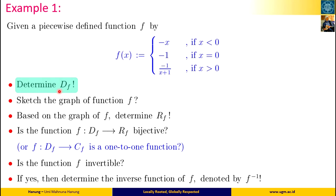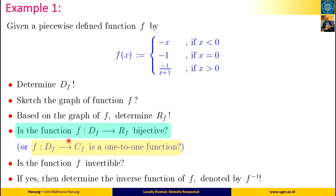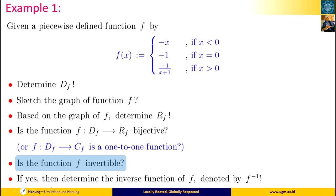We need to: determine the domain of function f (denoted df); sketch the graph of function f; determine the range of function f (denoted rf); analyze whether the function f from domain f to range f is injective (one-to-one) or not; and determine whether the function f is invertible, and if yes, find the formula of each inverse function.